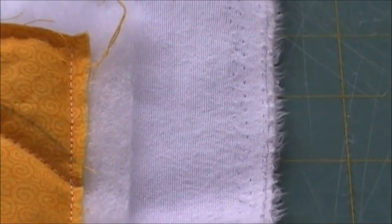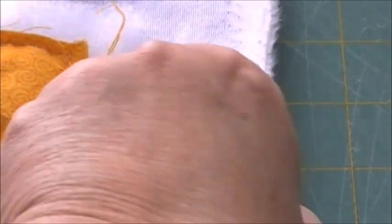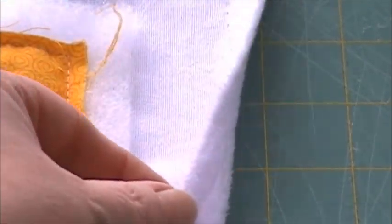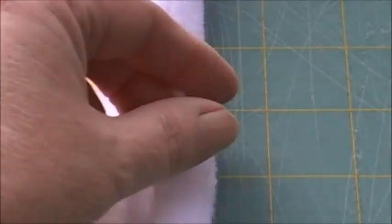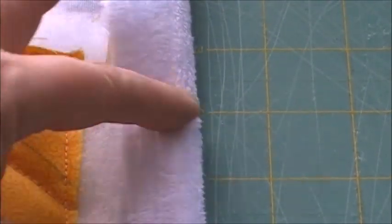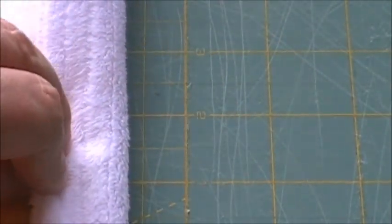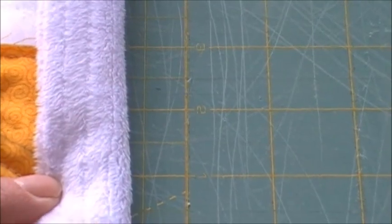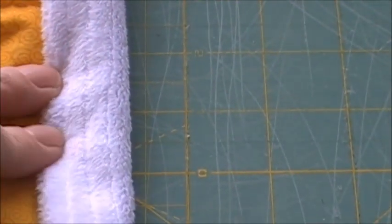This is the bolt edge so it's got those lines and normally you cut that off but this is going to be tucked in to the binding. It's going to be tucked in just a little bit and then it's going to be flipped over just like that. Can you see that?